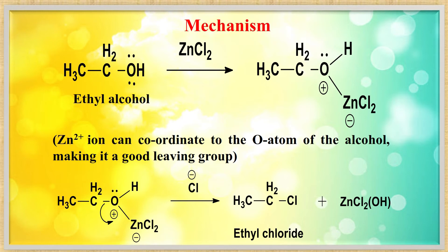Mechanism of Lucas process: ZnCl2 (Zn²⁺) coordinates with the oxygen atom, forming an intermediate O⁺ZnCl2⁻ — this is now a good leaving group. This leaving group departs from the carbon chain (e.g., CH3CH2-), and the chlorine ion attacks the carbon to give CH3CH2Cl.